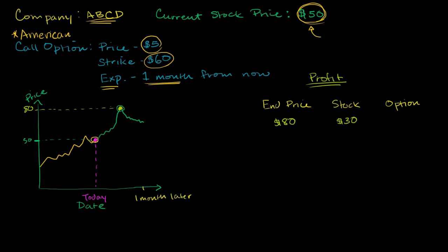Let me exercise my option. So I'm going to exercise my option, which gives me the right to buy the stock at $60 a share. So you're going to buy it at $60 a share right over here. And then you could immediately sell it for $80 a share.